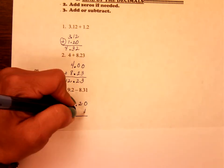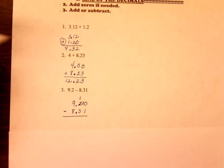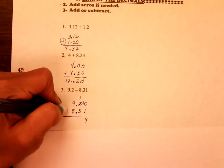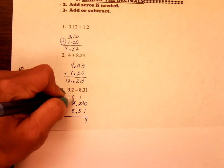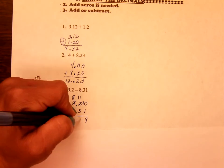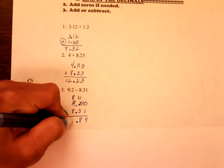Now you're subtracting. 0 minus 1 you can't do, so you need to borrow. So the 2 changes to 1. The 0 turns to 10. 10 minus 1 is 9. 1 minus 3 you can't do, so you have to borrow. 11 minus 3 is 8. Bring down the decimal. And 8 minus 8 is 0.